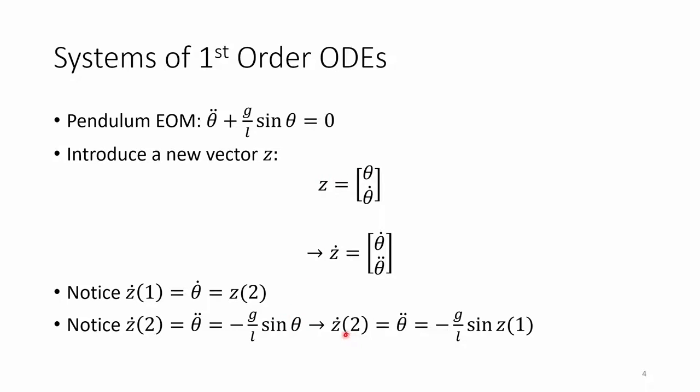So now Z dot of 2, or the second element in the Z dot vector, equals theta double dot, which just equals negative G over L, times sine of Z of 1, instead of sine of theta.